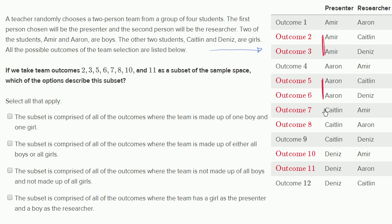Outcomes 7 and 8 are where Caitlin is the presenter paired with a boy researcher. And outcomes 10 and 11 are Denise as presenter with a boy researcher. So outcomes 7, 8, 10, and 11 are all the situations where you have a girl presenter and a boy researcher. Taken together, this subset covers all the outcomes where the team is made up of one boy and one girl. All of the other remaining scenarios involve either two boys or two girls.